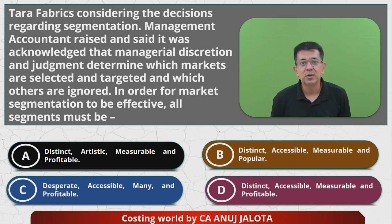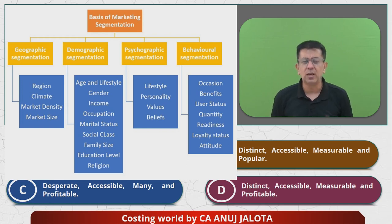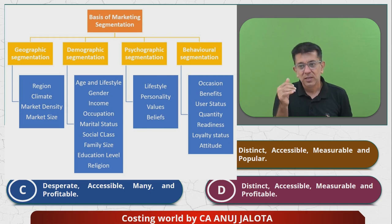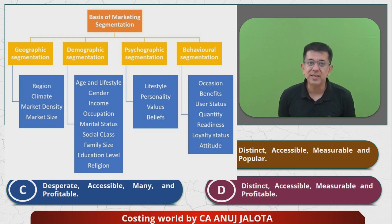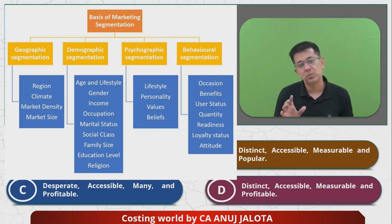Before I say the final answer, here's some extra knowledge. You can segment the market geographically - north, east, west, south - or demographically based on age, gender, income. There's also psychographic segmentation based on lifestyle and personality. For example, on Flipkart, some people filter from low to high price, others from high to low - these are separate segments and Flipkart sends different notifications to each. There's also behavioral segmentation based on occasion, benefits, user status, quantity, loyalty status, and attitude.